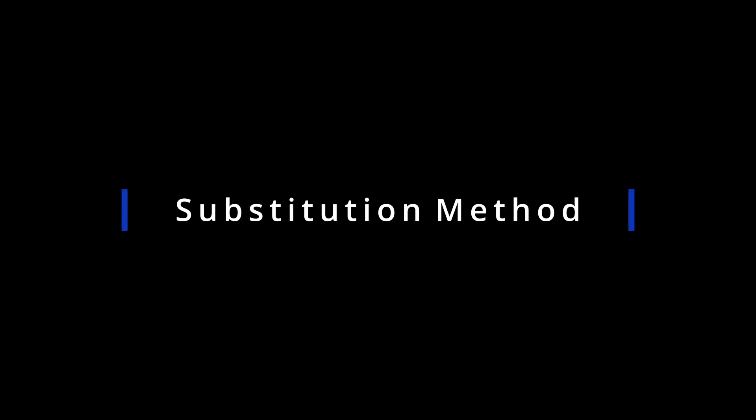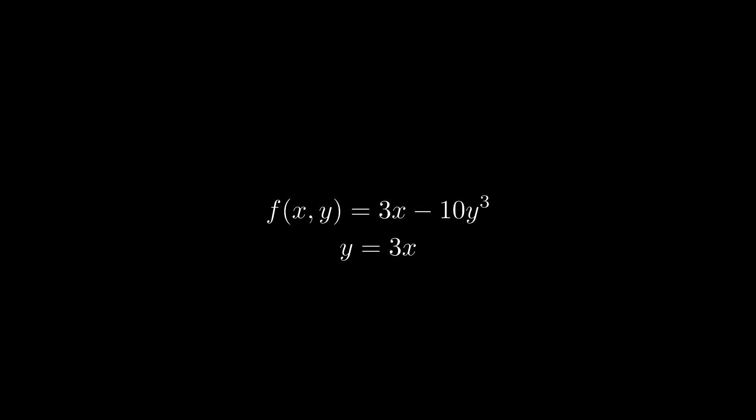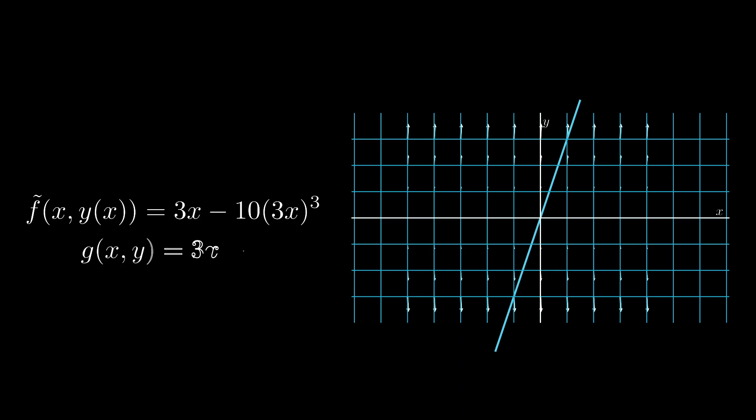The most straightforward way conceptually to do a constrained optimization is using the substitution method. Suppose the formula we want to optimize is f of x,y equals 3x minus 10y cubed, and we'd like to find the optima along the line y equals 3x. We can solve this problem by using the constraint equation to substitute y for x, or x for y, in our function f of x,y, yielding a new function f-tilde of x, which agrees with f of x,y whenever the constraint g of x,y equals 0 is satisfied.